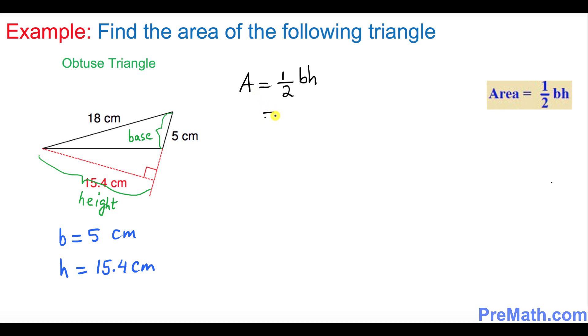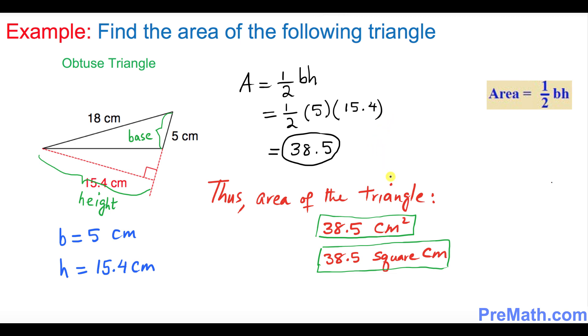Let's apply the values: one over two times base is 5 and the height is 15.4 centimeters. If you simplify, that's gonna give you 38.5. Thus the area of this triangle is 38.5 centimeter squared, or 38.5 square centimeter—both answers are acceptable. Thanks for watching and please subscribe to my channel for more exciting videos.